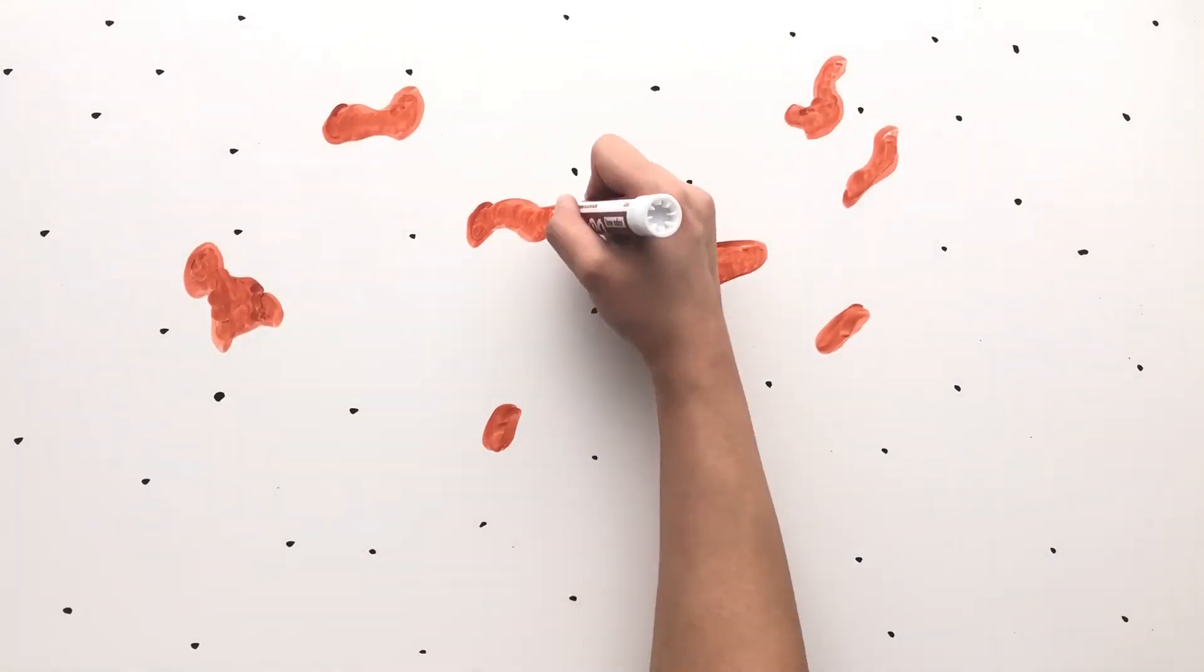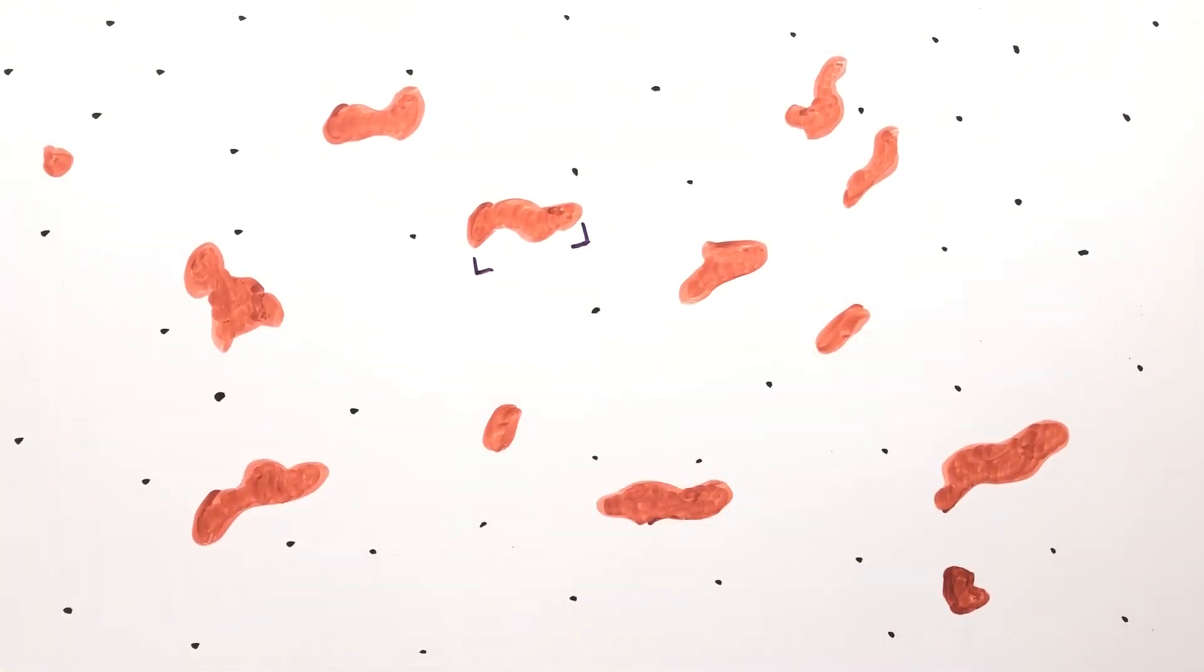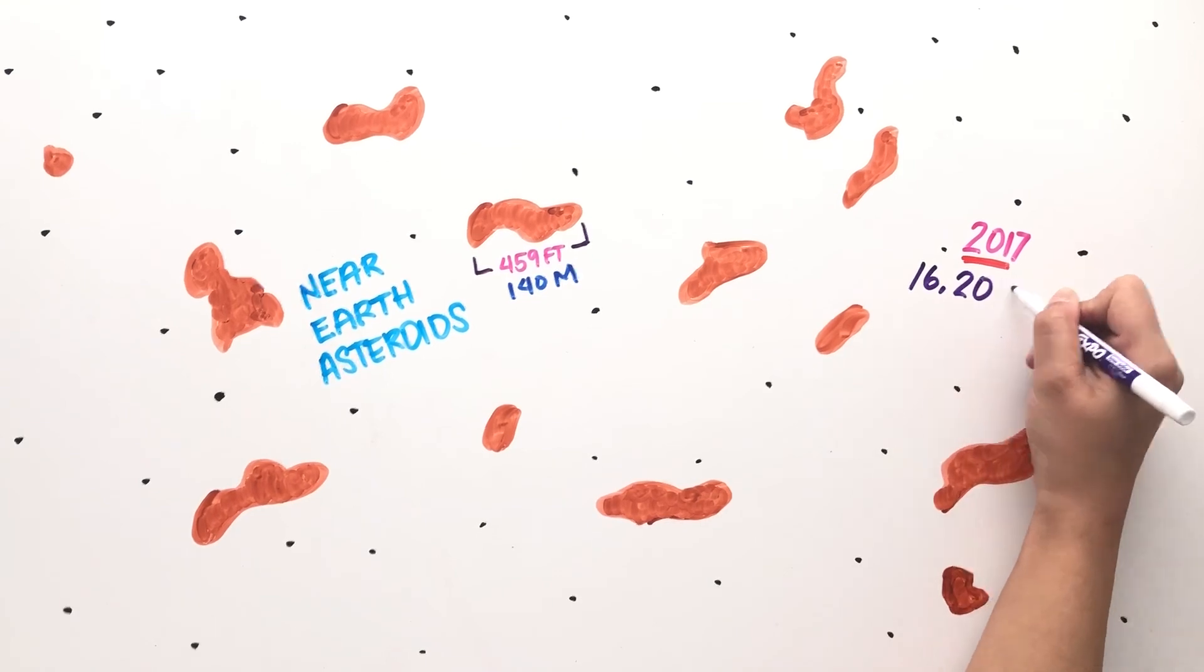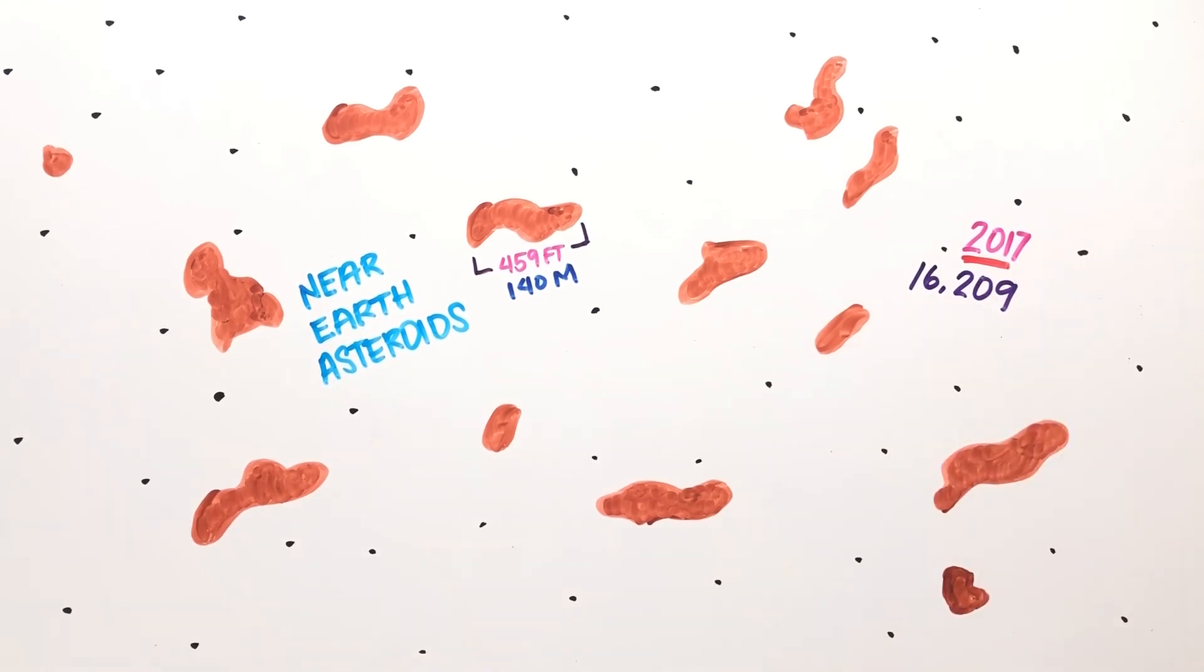NASA was shortly instructed to find asteroids that were at least 459 feet wide or larger, a threshold considered to pose a threat to Earth. These were called near-Earth asteroids, and as of 2017, 16,209 known near-Earth asteroids have been discovered.